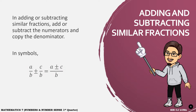add or subtract the numerators and just simply copy the denominator. In symbols, we have a over b plus or minus c over b is equal to a plus or minus c all over b. Wherein b should not be equal to 0. Otherwise, it is undefined.